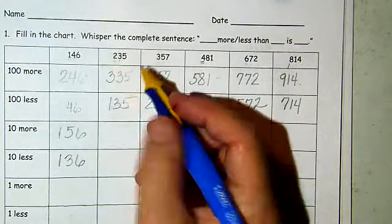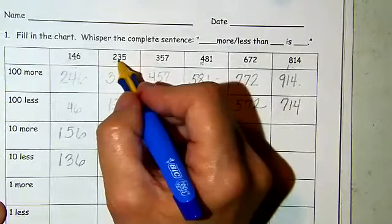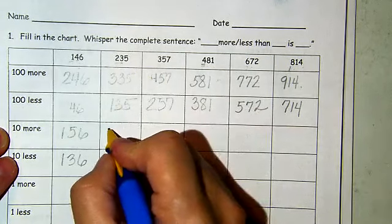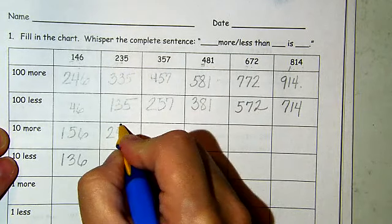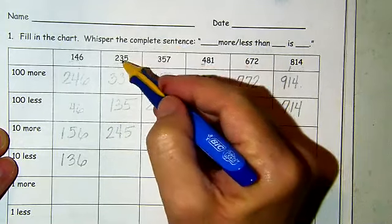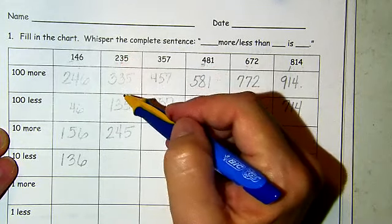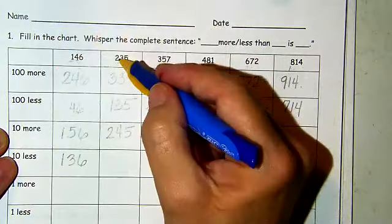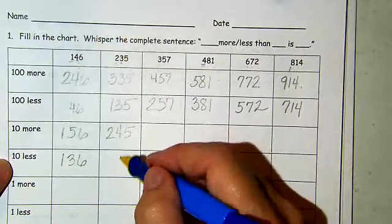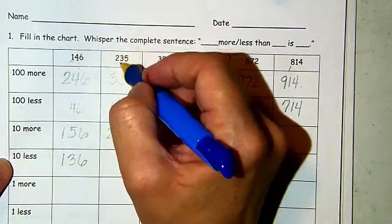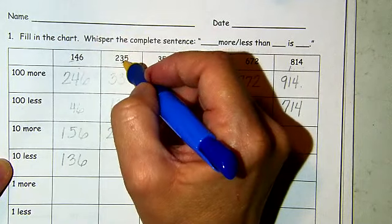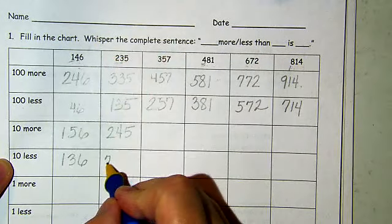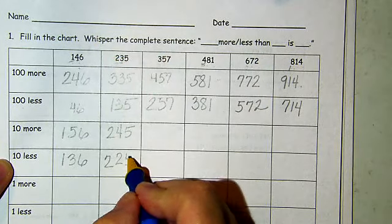235 — three is in the tens place. 10 more is going to be 245 — one more 10 makes it 255... wait, the 200 and the five ones are staying the same, we are only changing the 10. So 10 more is 245. 10 less — we're going to take one 10 away from the three tens, so that's going to be a two. The others stay the same — we're going to have 225.